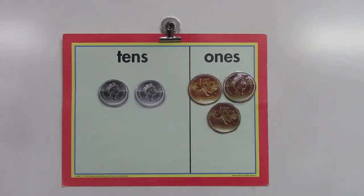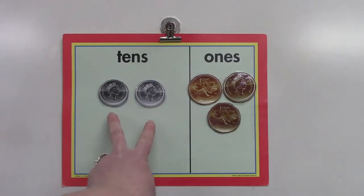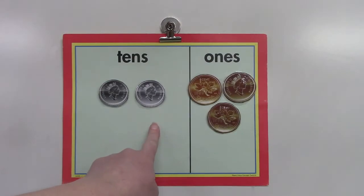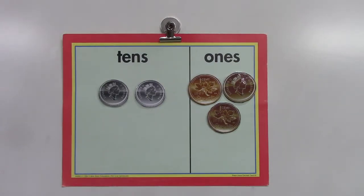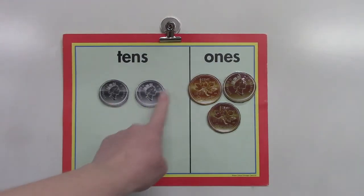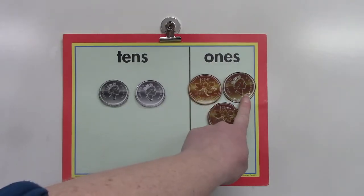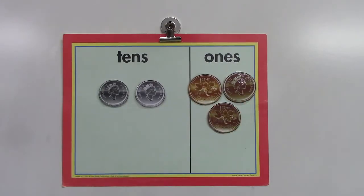The other side of our card uses coins to show us the places. We have two dimes showing us 10, 20, and we have three pennies: 10, 20, 21, 22, and 23.